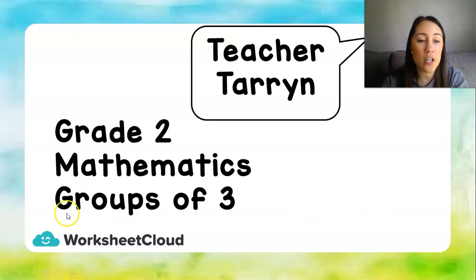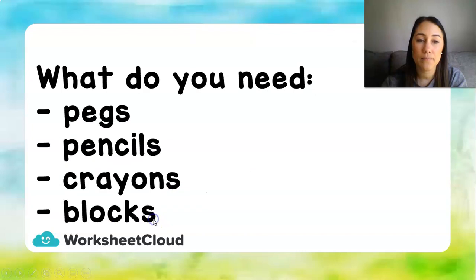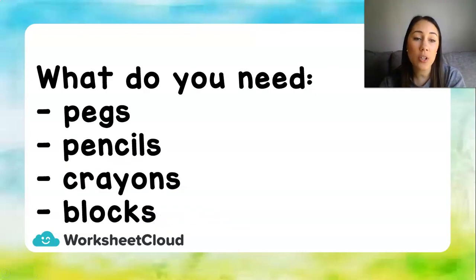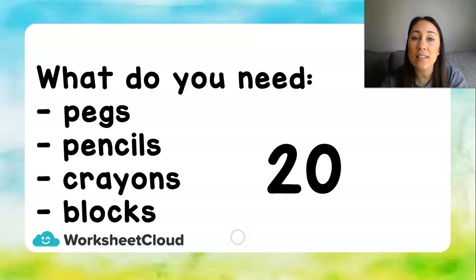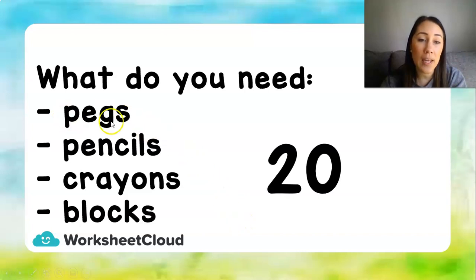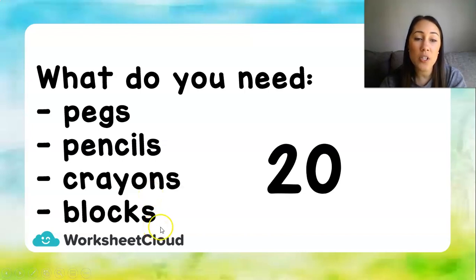We are going to learn about groups of three. You are going to need something small that you can count or move around, and you need at least 20 of this item — something like pegs, pencils, crayons, or blocks. You need 20 of the same thing.